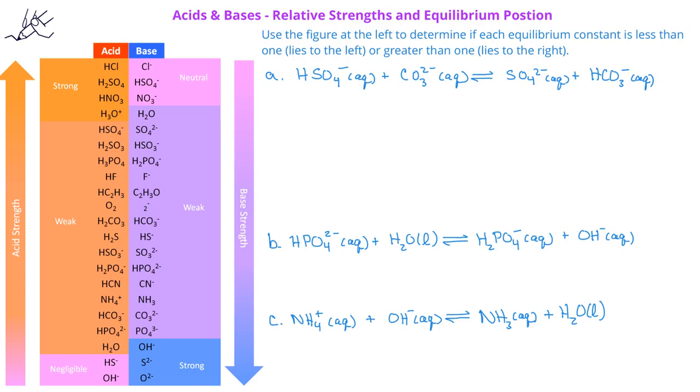In this problem, we're asked to use the figure at the left to determine if each of the three equilibriums provided has an equilibrium constant that is less than 1, or lies to the left, or if the equilibrium constant will be greater than 1, or in other words, if the equilibrium lies to the right.